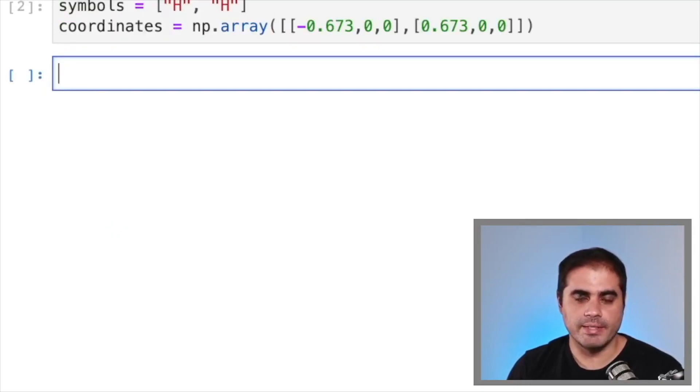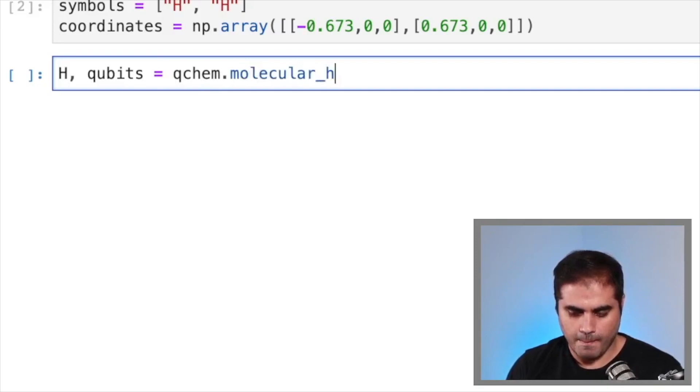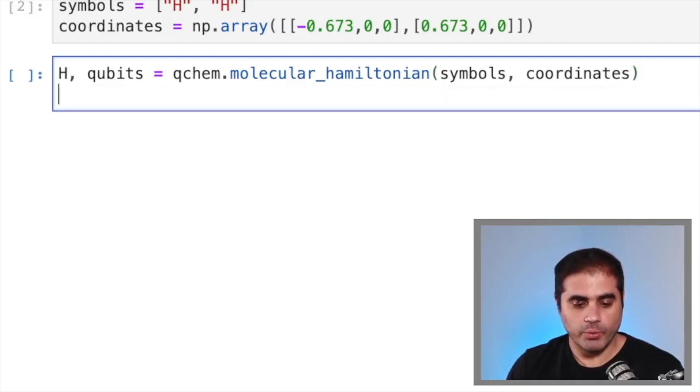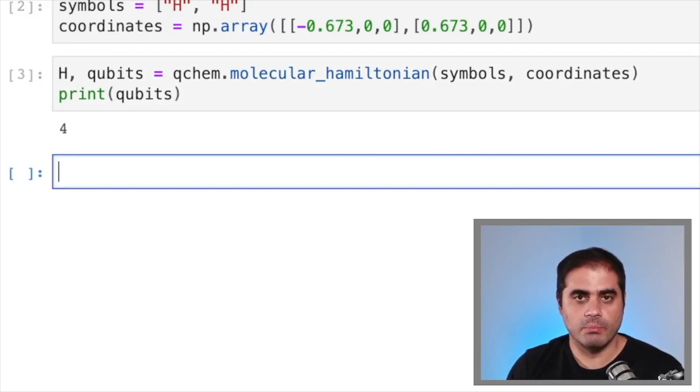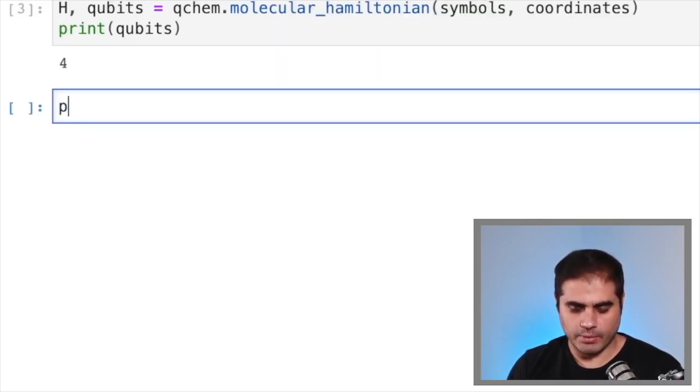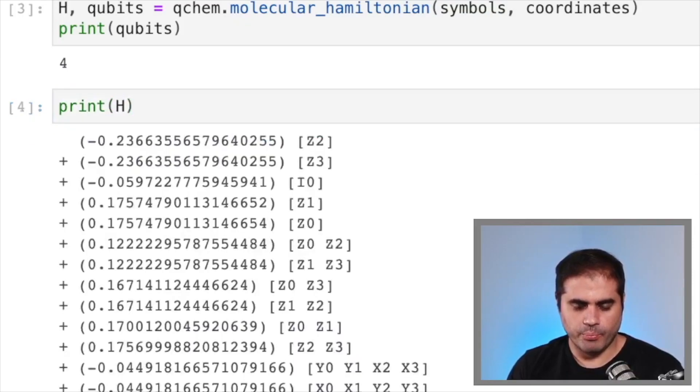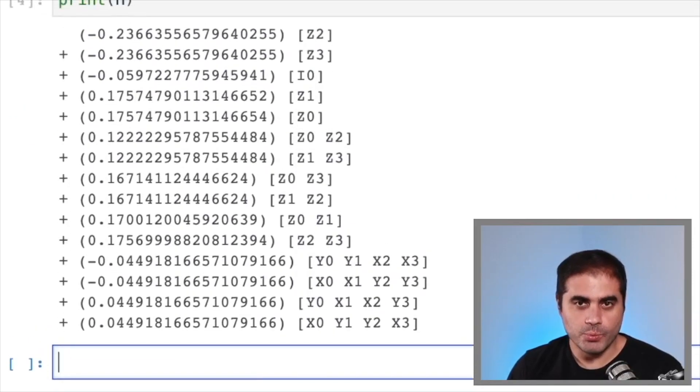A nice thing about the QChem library is that it allows us to calculate the molecular Hamiltonian under the hood. So let's define H for our Hamiltonian and qubits for the number of qubits that we will be needing for that Hamiltonian. So all that we need to do is QChem dot molecular Hamiltonian of the symbols and coordinates that we defined before. Then, for example, we can print qubits. And we will see that we need four qubits to model an H2 molecule. We can also print H to see how it looks like. If we print it, we see that we get this very, very long thing, which would be painful to calculate by hand. So thank goodness that we have the QChem library.